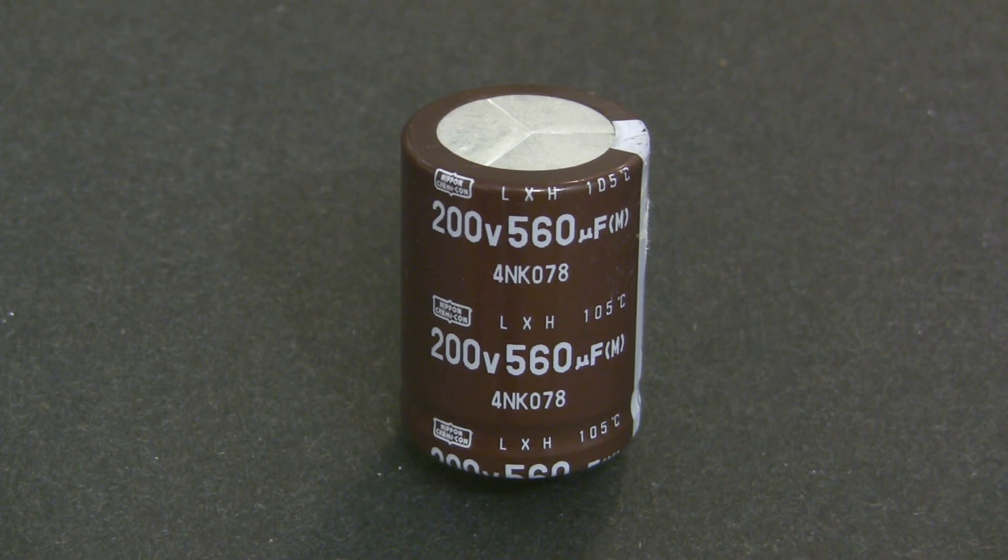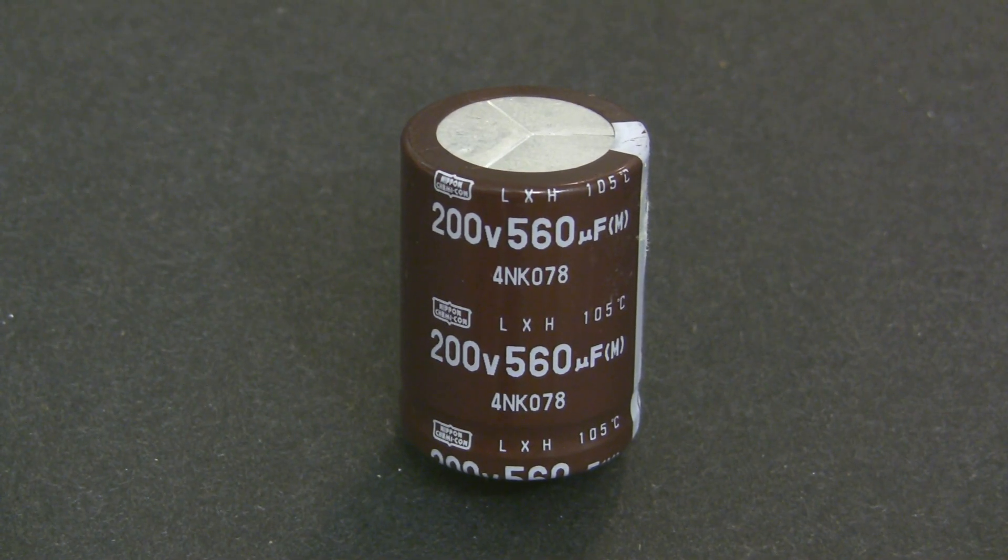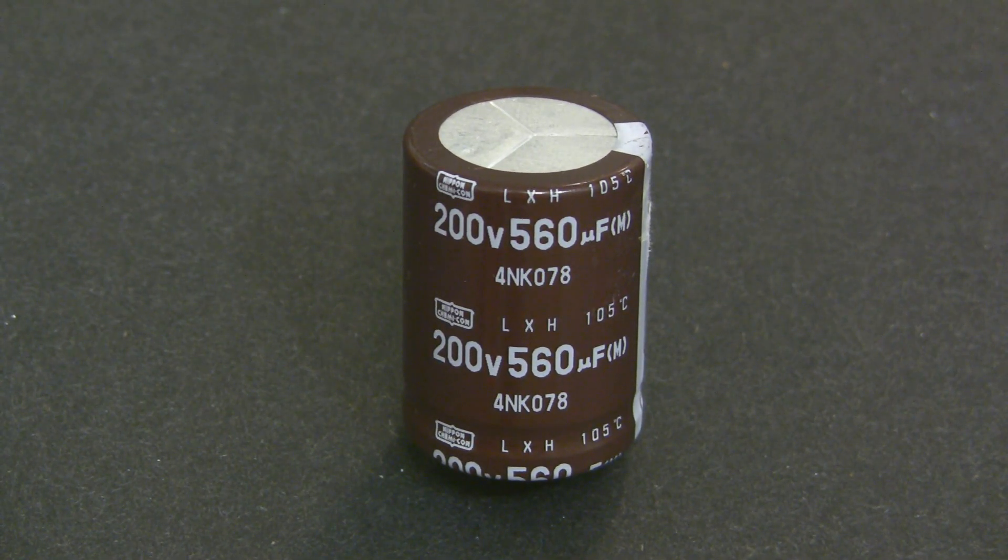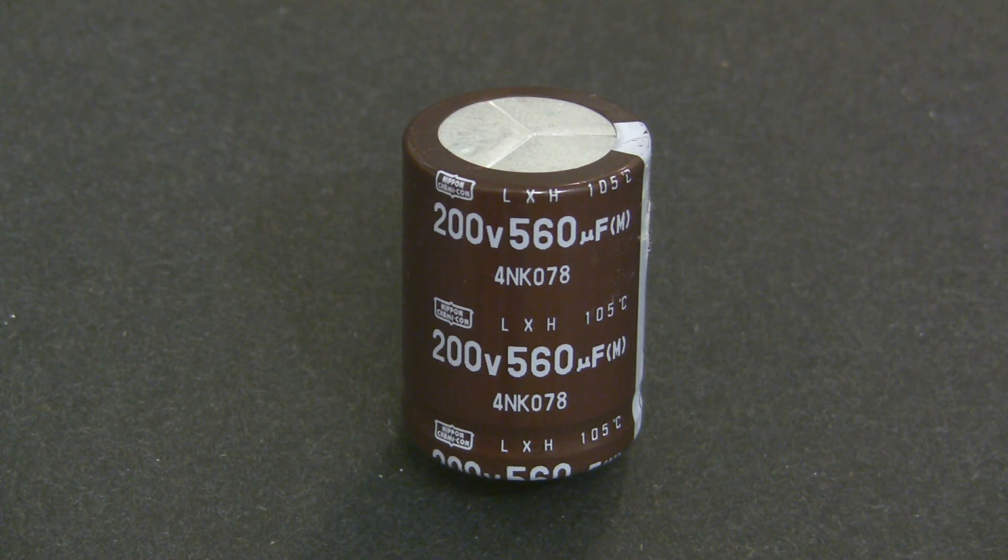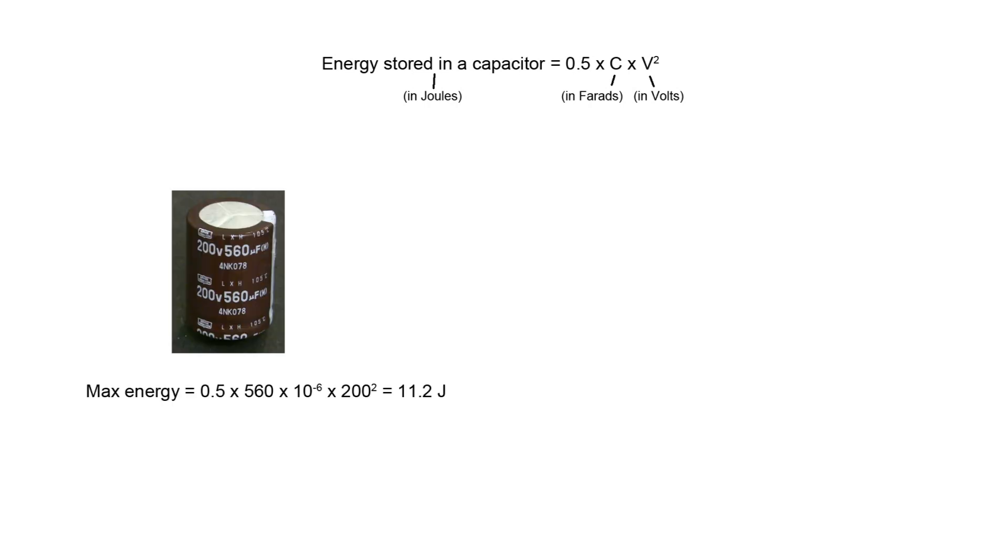Here's an example. This is a 560 microfarad 200 volt electrolytic capacitor and it's about as big as you'll ever see on a consumer circuit board. The energy stored in a capacitor is given by this formula. If I apply it to this capacitor I can see that it can store a maximum of 11.2 joules.